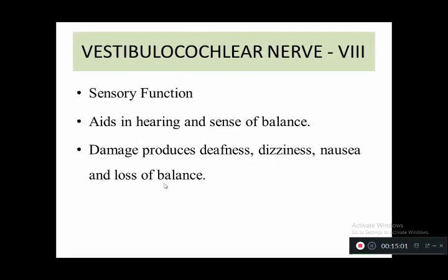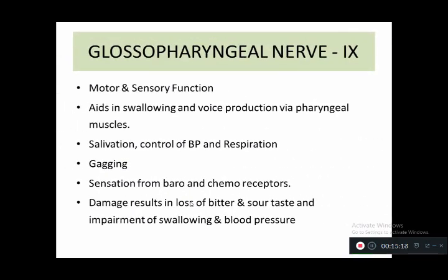The eighth cranial nerve is the vestibulocochlear nerve. It performs sensory function and is responsible for hearing and sense of balance. Damage causes deafness, dizziness, nausea, and loss of balance. The ninth cranial nerve is the glossopharyngeal nerve. It performs motor and sensory functions — helping in swallowing, voice protection via pharyngeal muscles, salivation, regulation of blood pressure and respiration, and gag reflex. Sensations from baroreceptors and chemoreceptors are also transmitted through this nerve. Damage leads to loss of bitter and sour taste, impaired swallowing, and BP anomalies.